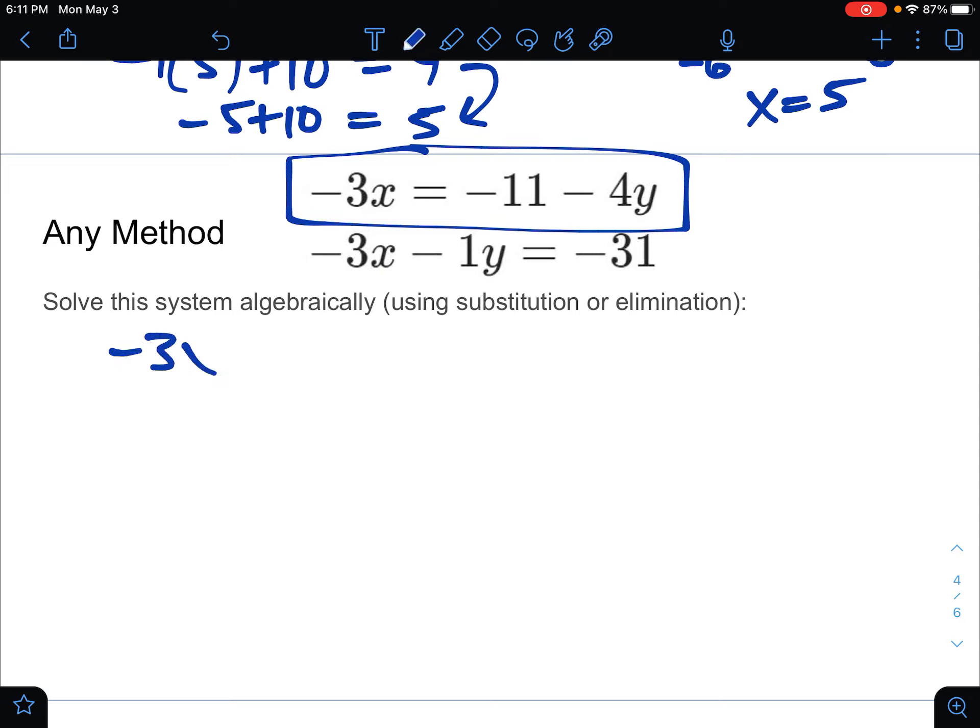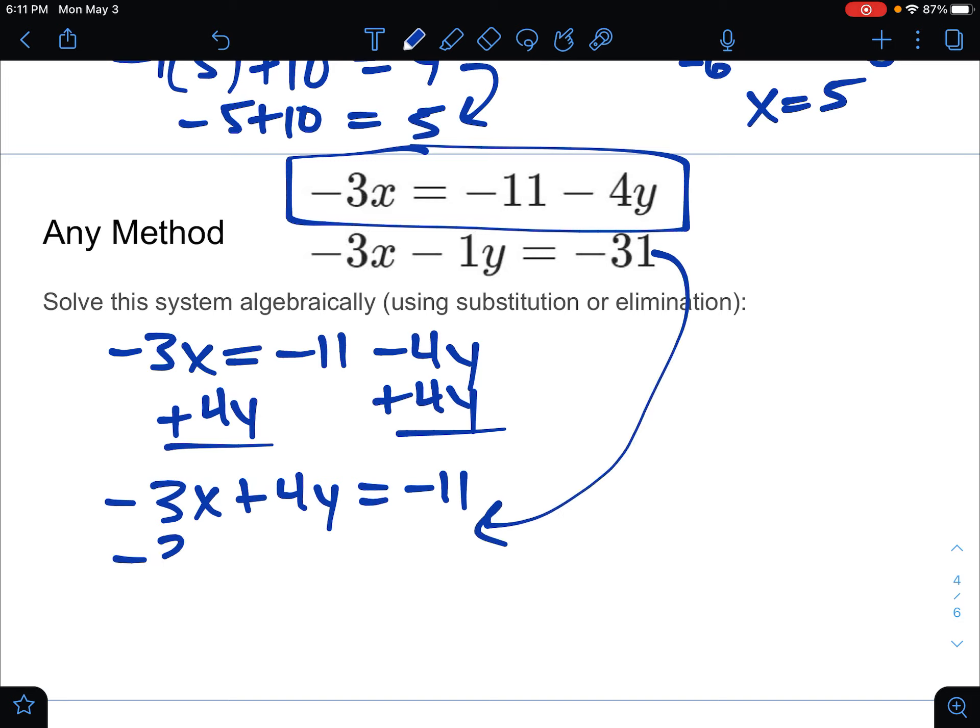So let's take the negative 3x equals negative 11 minus 4y. I want to get the y's to the side with the x's. So I'm going to add the y's over using the inverse operation since it's being subtracted. So negative 3x plus 4y equals negative 11. This is the first equation, just rewritten.